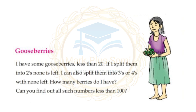Next: gooseberries. I have some gooseberries, less than twenty. If I split them into twos, none is left. I can also split them into threes or fours with none left. How many berries do I have? The answer is 12.